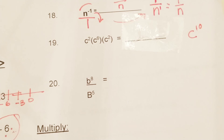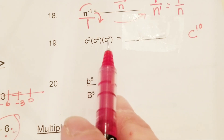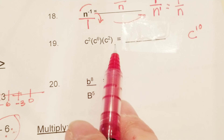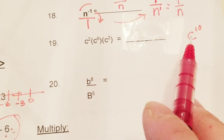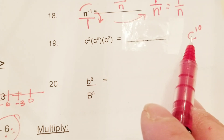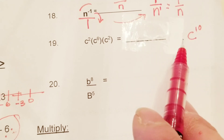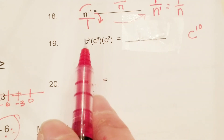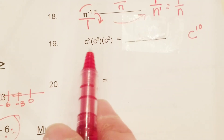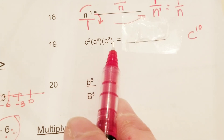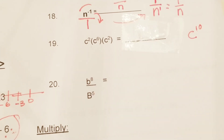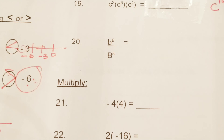So when you're multiplying variables with an exponent, you will keep the base. You don't add the bases, you don't multiply the bases to get like three c's — you will keep the base because they are all like terms, but you will add the exponents.